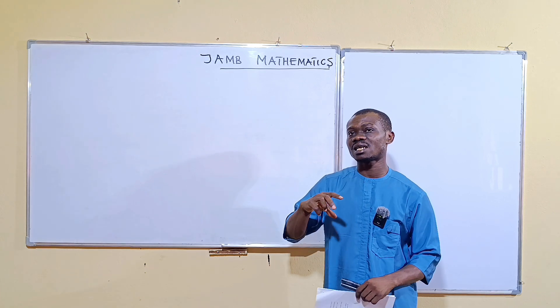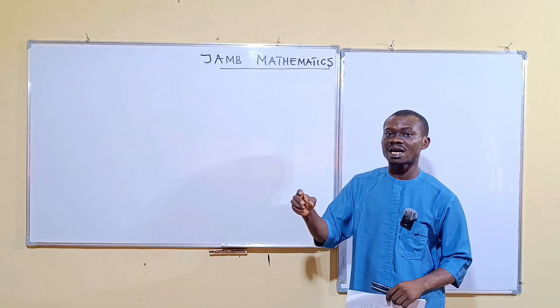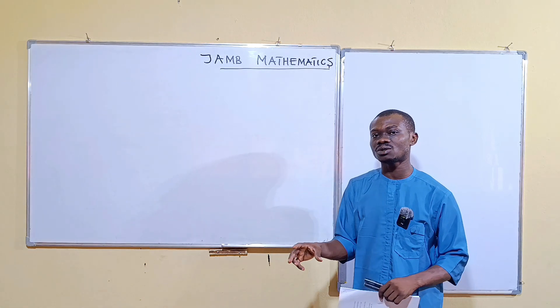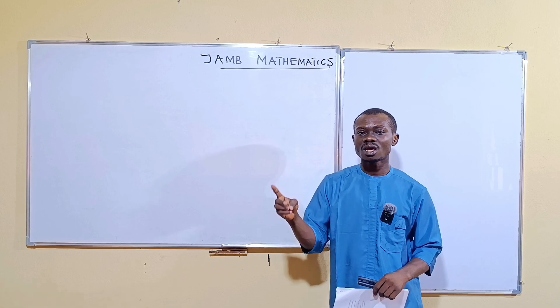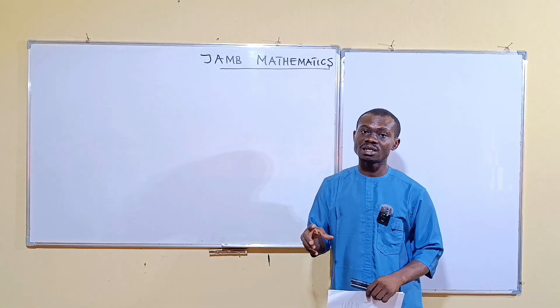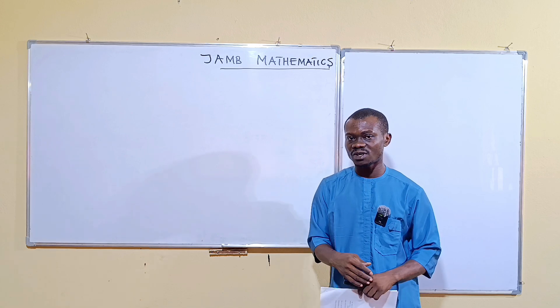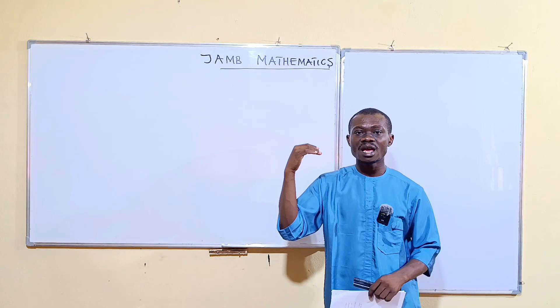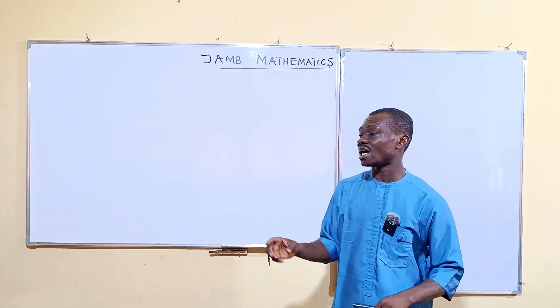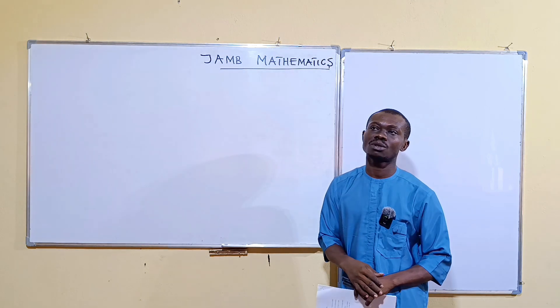That means the student has five credits in English, Math, and the other three core subjects. If you're a science student, you should have in Biology, Chemistry, and Physics. So then you are good to be admitted into a university or a tertiary institution.